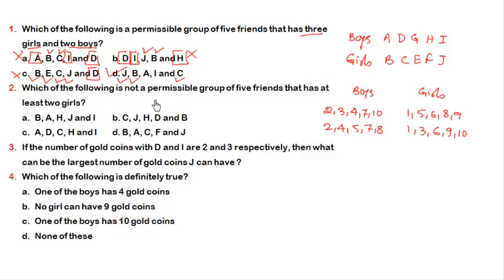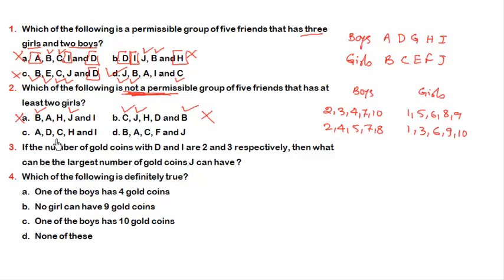Question 2 asks which group is NOT a permissible group of 5 friends with at least 2 girls. Option A contains B and J as girls — two girls, so it is permissible. Option B contains C, J and B — three girls, which is also permissible. Option C contains only C as a girl, with all others being boys — just one girl, which fails the condition of at least two girls. So option C is not a permissible group and is the answer to question 2.